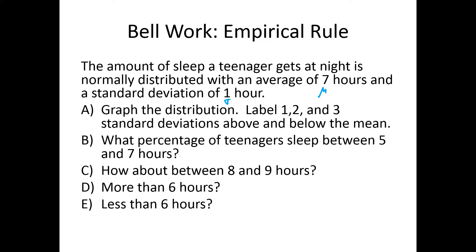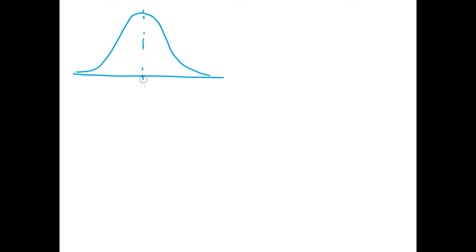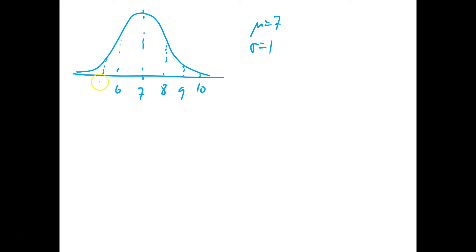Alright, let's give this a shot. First thing I'm going to do is create my distribution. I'm going to make my normal distribution — it doesn't have to be perfect. I'm going to put right in the middle our average, which is 7 hours. The standard deviation is 1 hour, so I'll find the inflection point — that's where the curvature changes. So that will be 8 and 6, then 9 and 10 going out, and on the left 5 and 4. Just a rough sketch is fine.